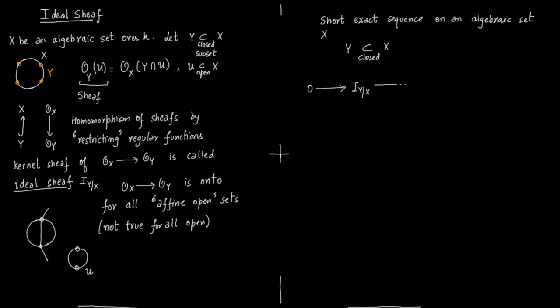Then this is an injective map into O of x. Then you have a surjective map to O of y and then you go to 0. So let us write the injectivity and surjectivity down. This is the injective map.